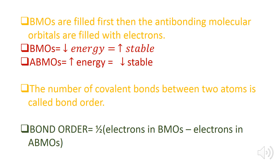Bonding molecular orbitals are lower in energy and therefore more stable, whereas anti-bonding molecular orbitals have higher energy and are less stable. The number of covalent bonds between two atoms is called bond order. The formula for bond order is half of the difference between the number of electrons in the bonding molecular orbitals and the anti-bonding molecular orbitals.